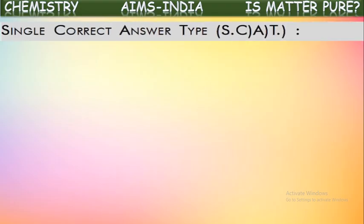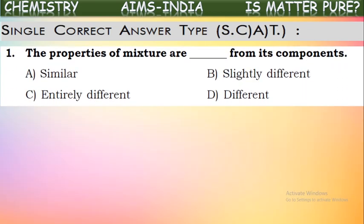Let us start with single correct answer type questions, where there will be a question with four options and one correct answer. Read the question and answers carefully and try to answer them. The first question: the properties of a mixture are dash to its components. When two or more components are mixed to form a mixture, they retain their properties. That is why they can be separated by physical means. So the properties of a mixture will be almost similar to those of its components.